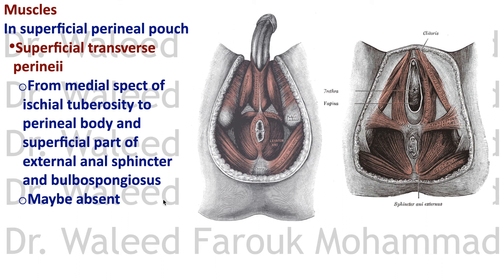The muscles of the urogenital diaphragm in males include the superficial transverse perinei muscles, which arise from the medial aspect of the ischial tuberosity and go to the perineal body, the superficial part of the external anal sphincter, and the beginning of the bulbospongiosus. This muscle may be absent in some individuals. In females the same muscles are present, and we will compare them shortly.